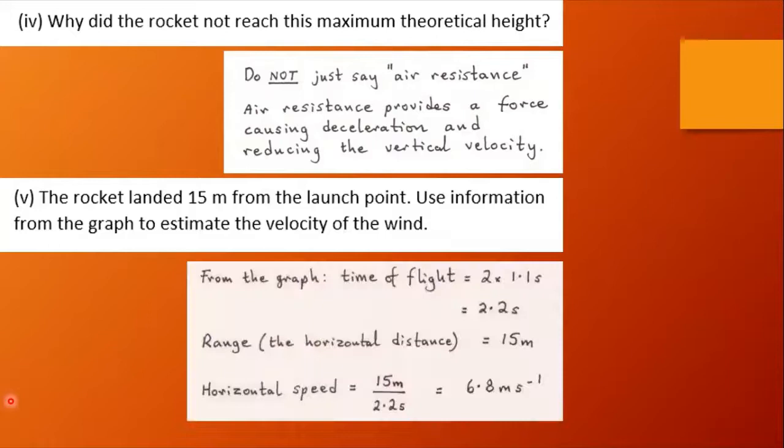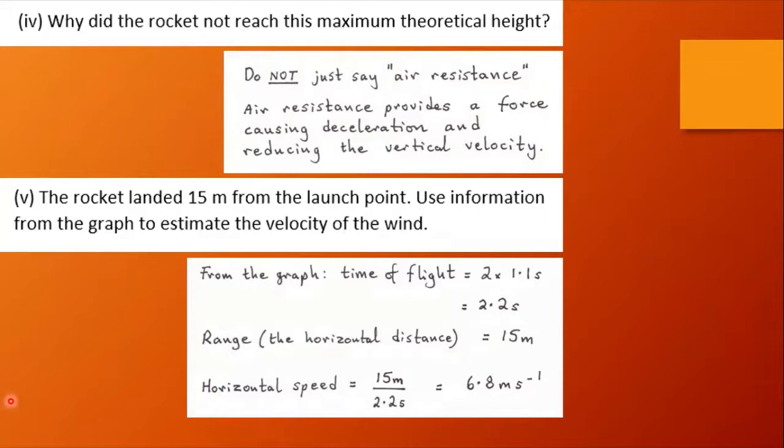The next part: the rocket landed 15 meters from the launch point. Use information from the graph to estimate the velocity of the wind. Well from the graph the time of flight is about 2.2 seconds. The range, the horizontal distance, is about 15 meters. The horizontal speed is 15 meters over 2.2 seconds which is 6.8 ms^-1, but of course we are assuming that the rocket moves horizontally at the same speed as the wind. This is an assumption.